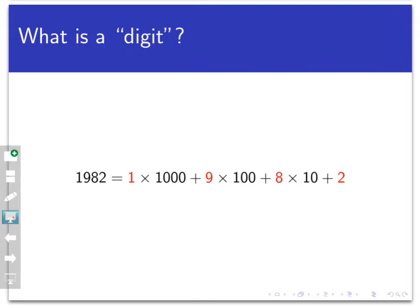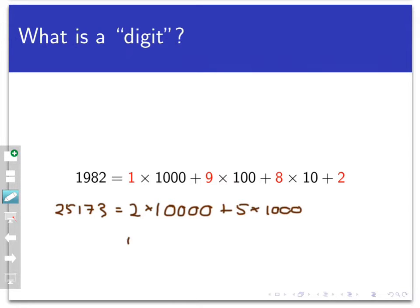Every integer can be expanded this way. As an additional example, the number 25,173 can be written as 2 times 10,000 plus 5 times 1,000 plus 1 times 100 plus 7 times 10 plus 3. So every number can be stretched apart into digits — numbers between 0 and 9 — times powers of 10. That's an essential portion of the proof we're about to look at.